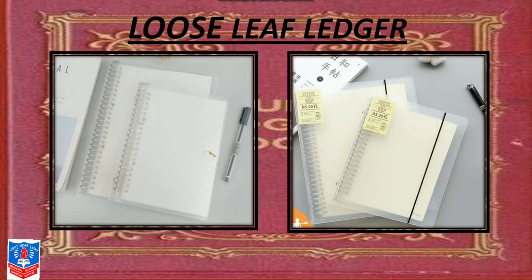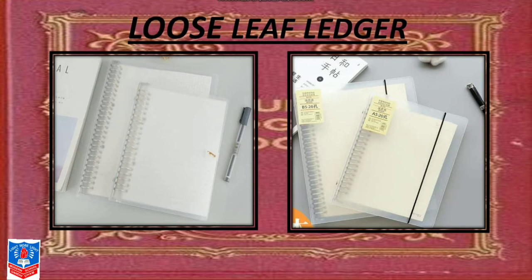Moving on to loose leaf ledgers. This type of ledger is in a filed form placed in between two thick paper covers or two metal sheets. The loose pages are inserted between the top and bottom covers and then locked, which ensures safety so that pages cannot fall out. Each page is also serially numbered. A trader can increase or decrease the number of pages according to their requirements, since each page is an individual loose leaf.